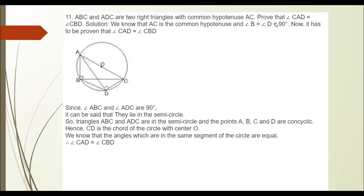Welcome to math class children. We completed circle 7.5 sums. Let us move on to the 7th sum. ABC and ADC are two right angle triangles with common hypotenuse AC. Prove that angle CAD is equal to angle CBD.